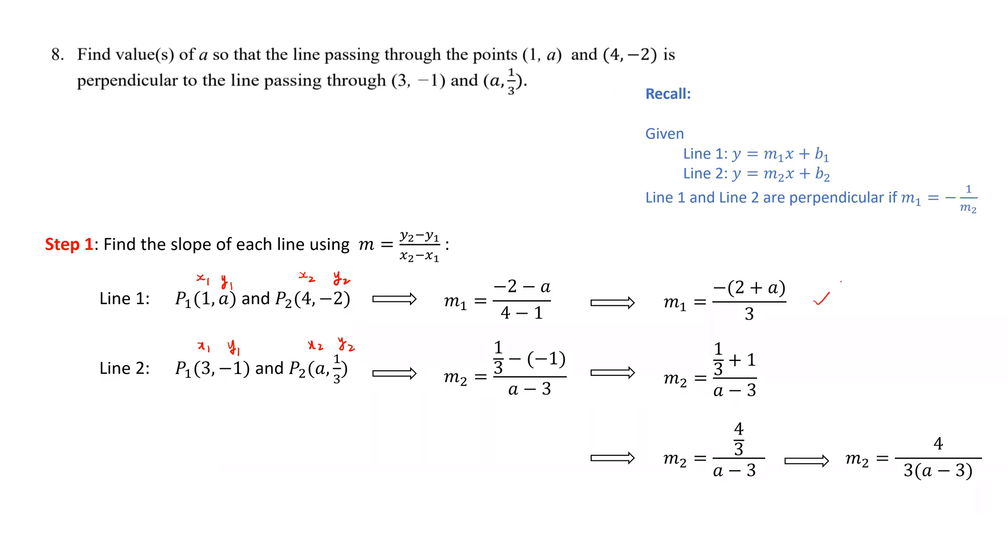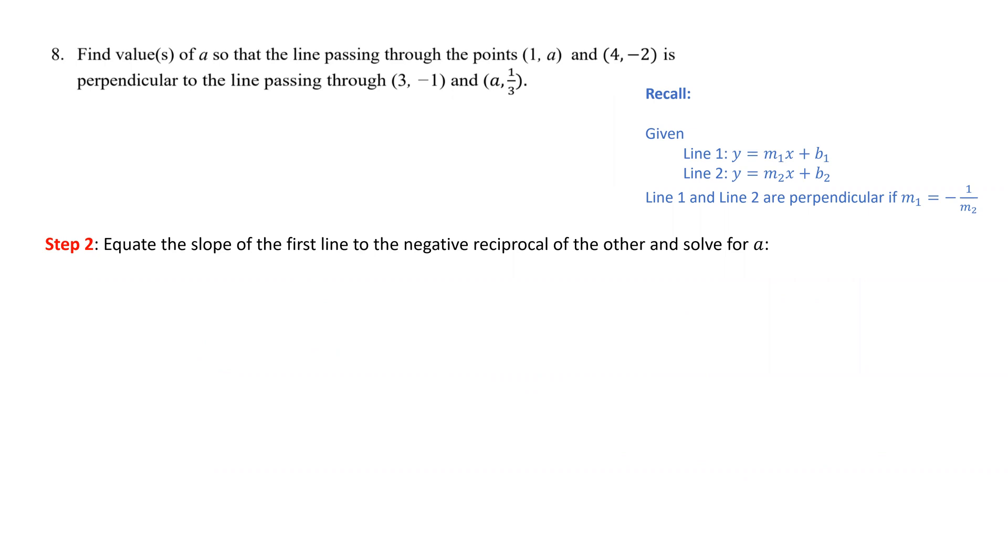Now having the slopes of both lines, we can use the relation between the slopes of two perpendicular lines. We equate the slope of the first line to the negative reciprocal of the other and solve for a.